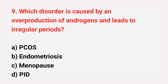Question number 9: Which disorder is caused by an overproduction of androgens and leads to irregular periods? The right answer is option A, PCOS.